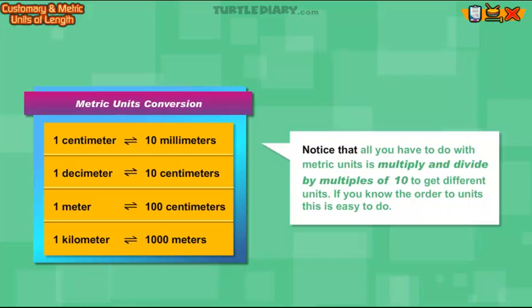Notice that all you have to do with metric units is multiply and divide by multiples of 10 to get different units. If you know the order to units, this is easy to do.